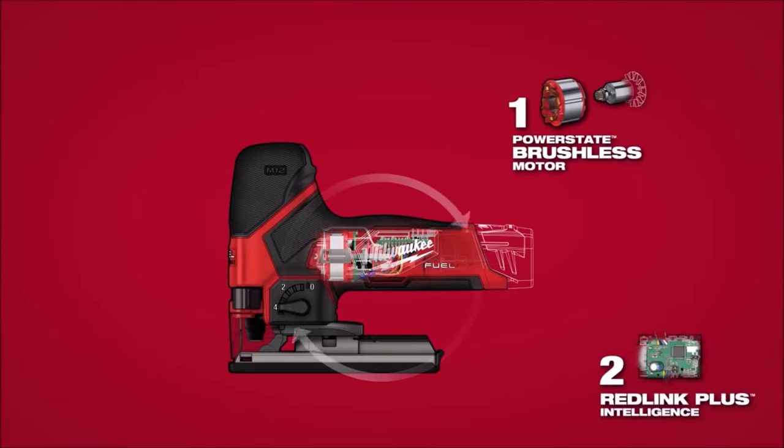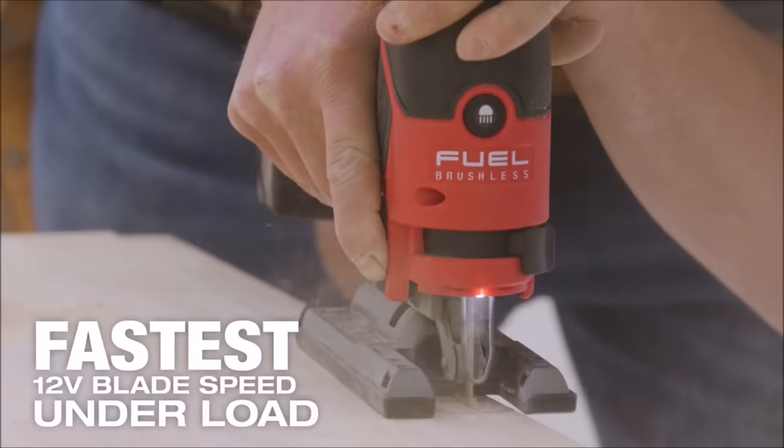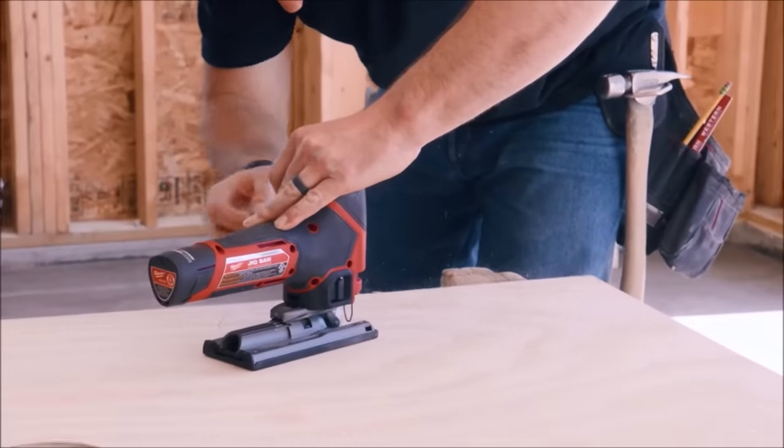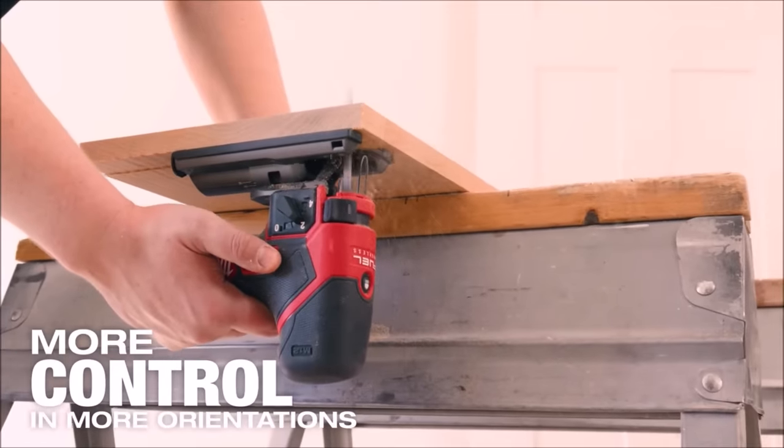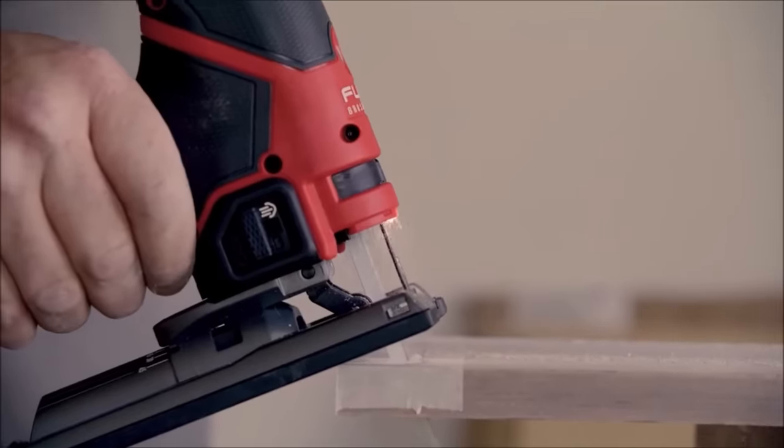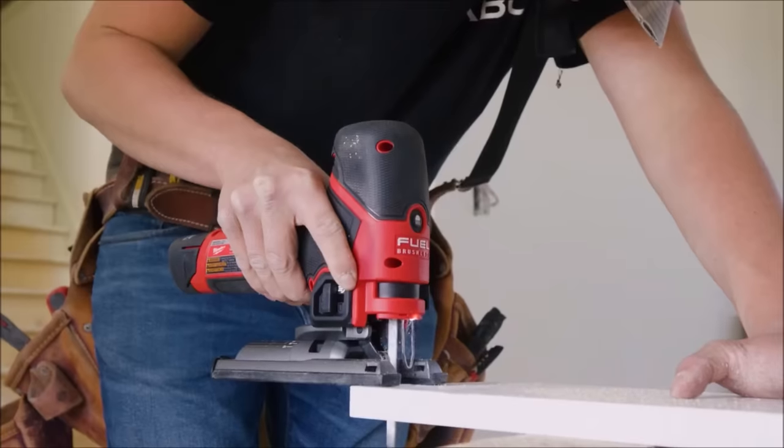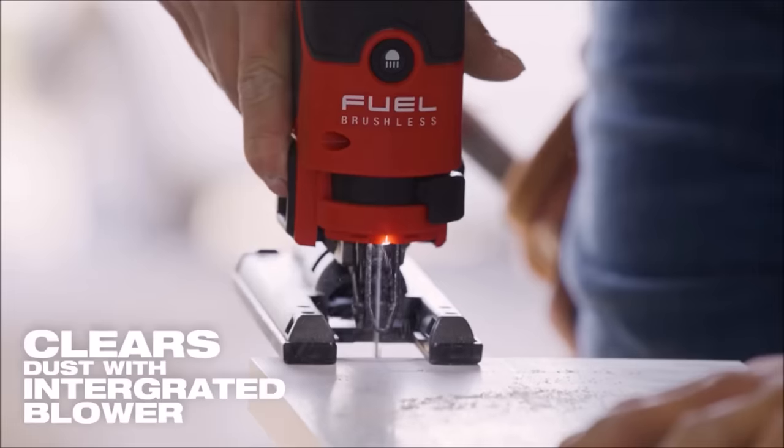Number 1. The Milwaukee M12 Fuel Jig Saw redefines woodworking precision and power for professional carpenters and remodelers. With its powerful PowerState Brushless Motor and RedLink Plus Intelligence, it delivers an industry-leading 3,000 strokes per minute at a 7-eighths-inch stroke, ensuring clean, controlled cuts across diverse materials. This compact tool provides the fastest 12-volt blade speed under load, granting superior efficiency on the jobsite.